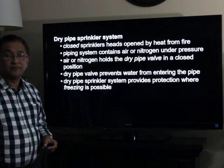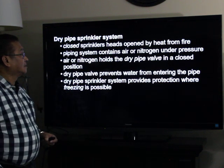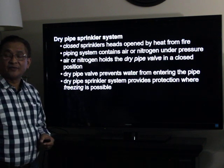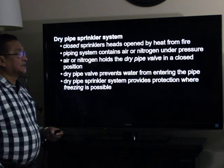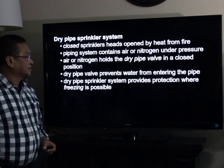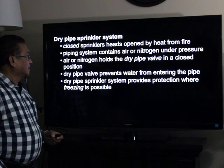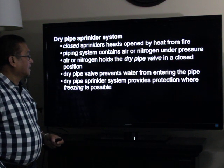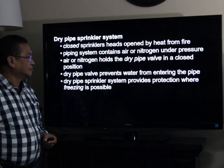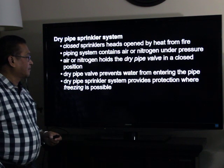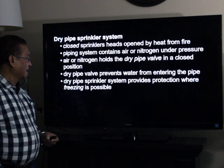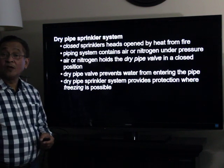In a dry pipe sprinkler system, we have closed sprinkler heads opened by heat from fire. The piping system contains air or nitrogen under pressure. Air or nitrogen holds the dry pipe valve in a closed position. The dry pipe valve prevents water from entering the pipe.